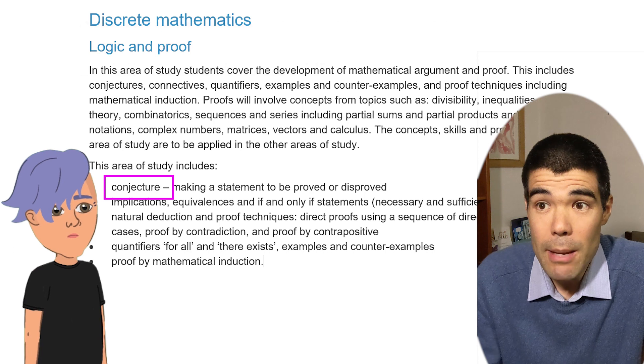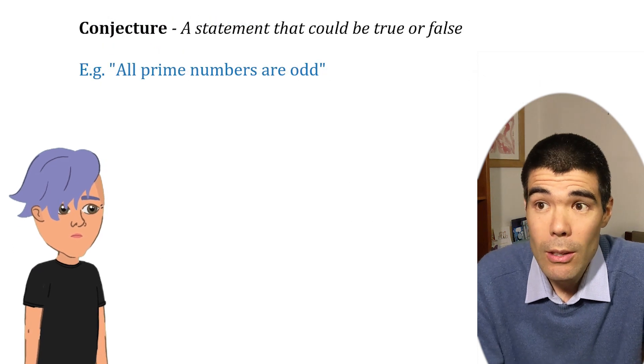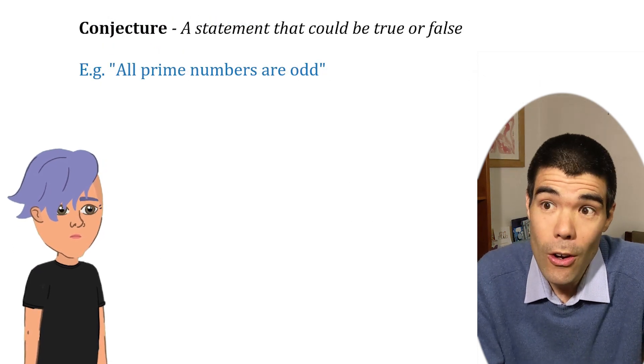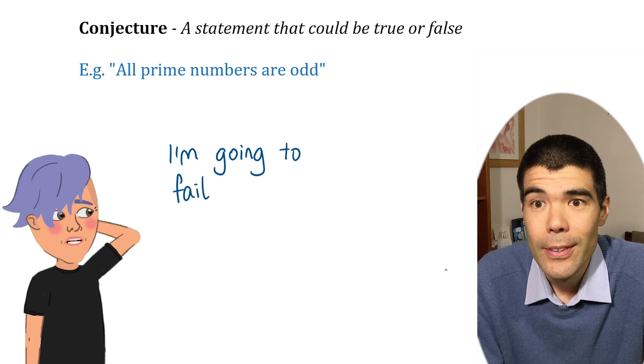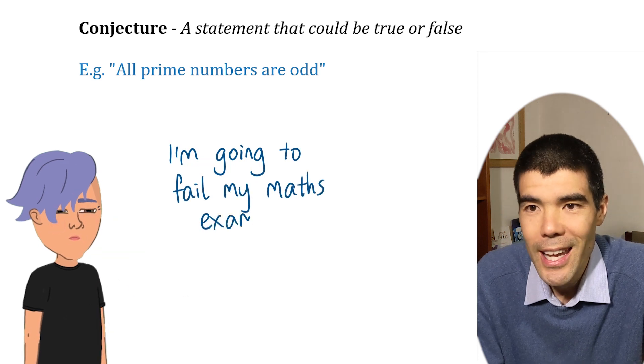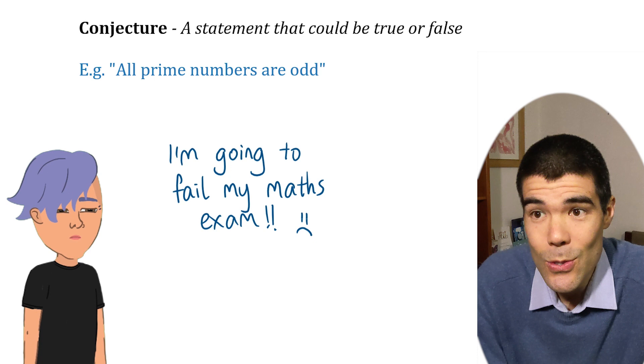Conjecture. It's just a statement that could be true or false, like all prime numbers are odd, or I'm going to fail my maths exam. Right. And both those conjectures would be false.